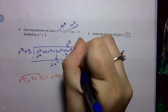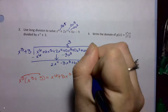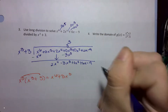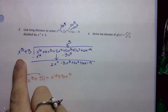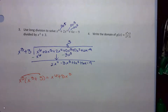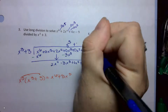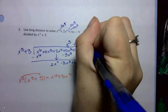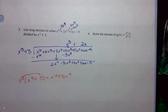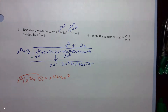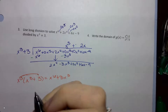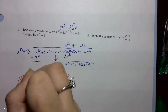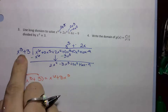I'm going to bring down all the other terms: 0x squared plus 6x minus 9. Now I'm looking to turn x cubed into 2x to the 4th — I need to multiply by 2x. So I multiply 2x by x plus 3, which is always multiplying by what I'm dividing by, and I distribute.